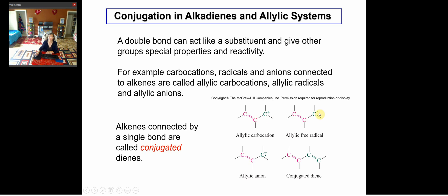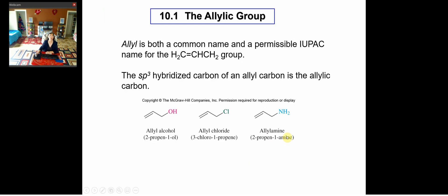Similarly, if you have a radical, this group is called an allylic free radical. The last one — a negatively charged ion — is called an allylic ion. Conjugated dienes are the last example: you have carbon double bonds connected to carbon single bonds, then carbon double bonds — single, double, single, double bonds alternatively occurring. These are called conjugated dienes.